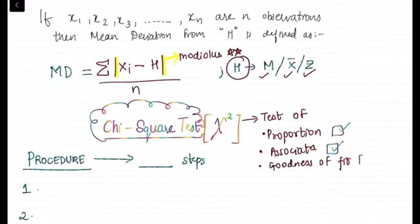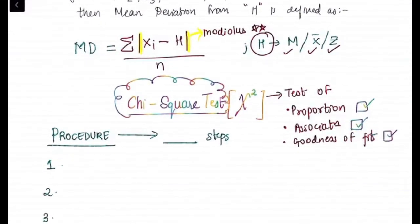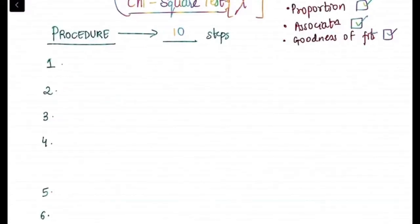Now coming to chi-square test, which is a very important test. It is a test of proportion, test of association, and check the goodness of fit.